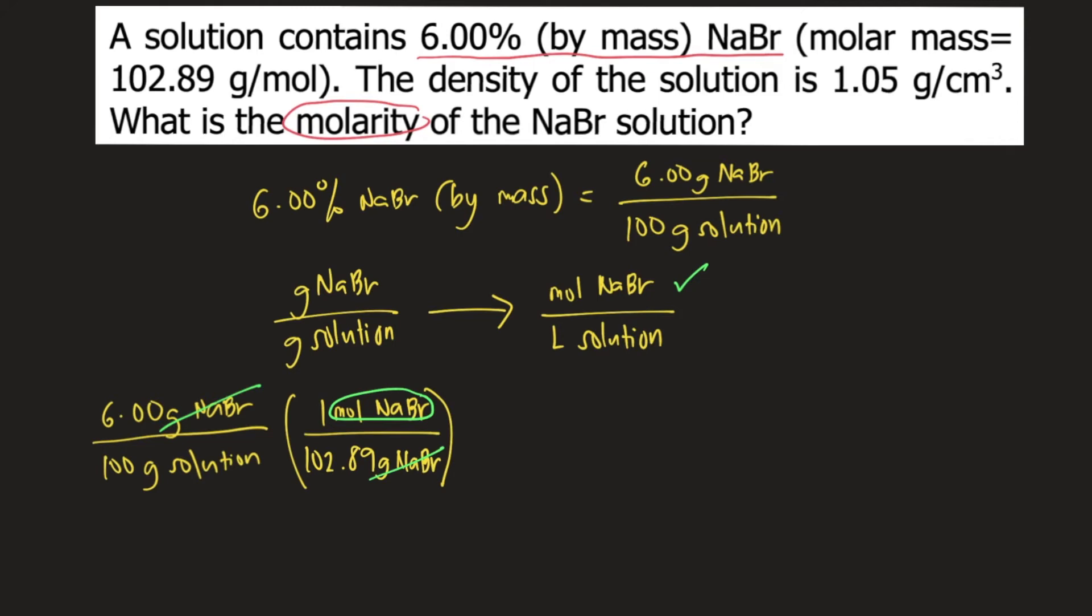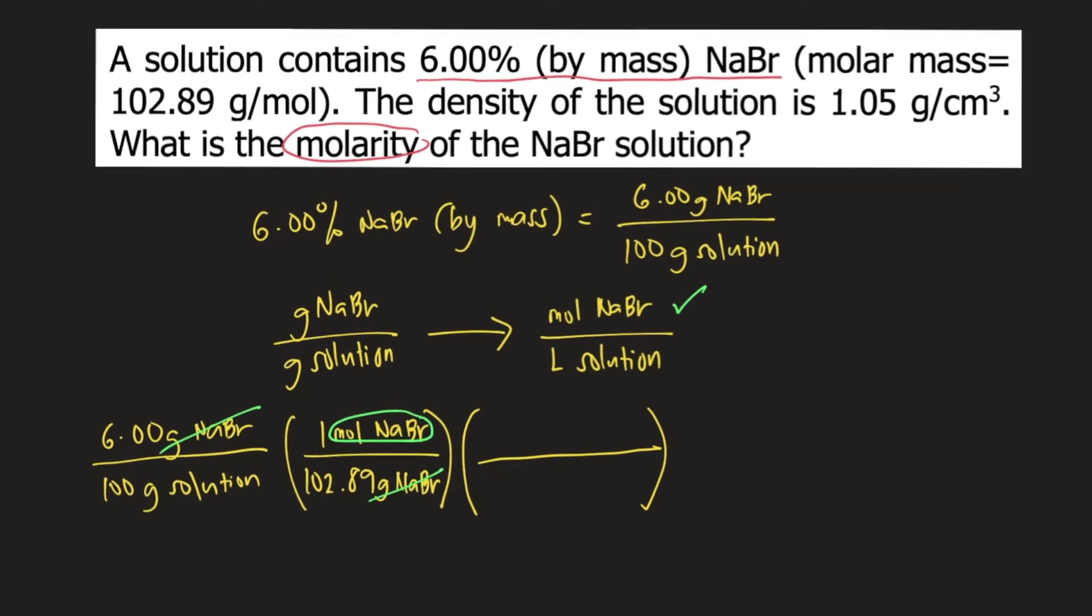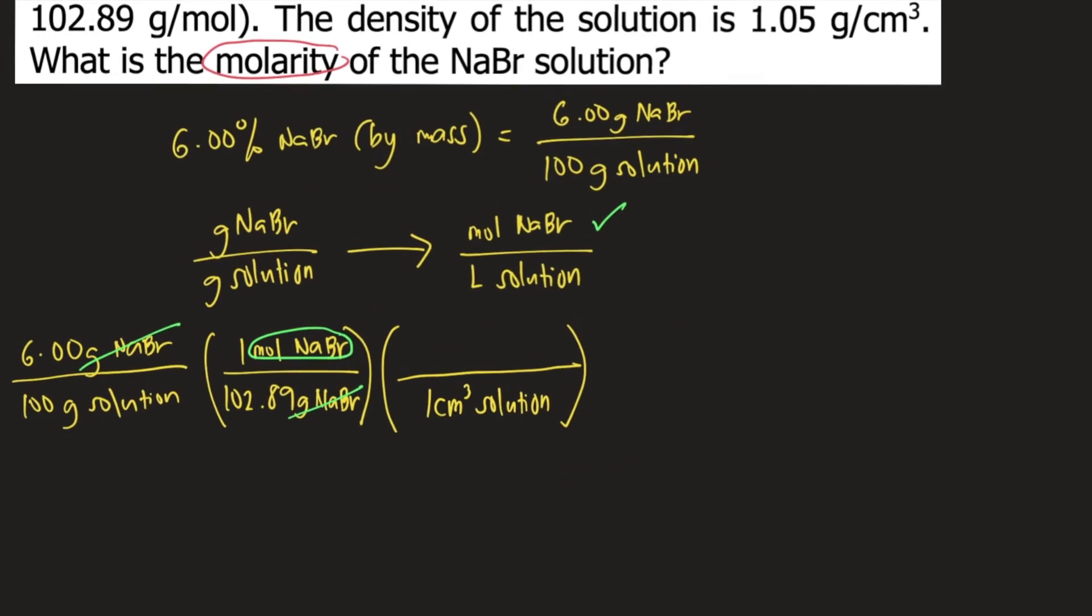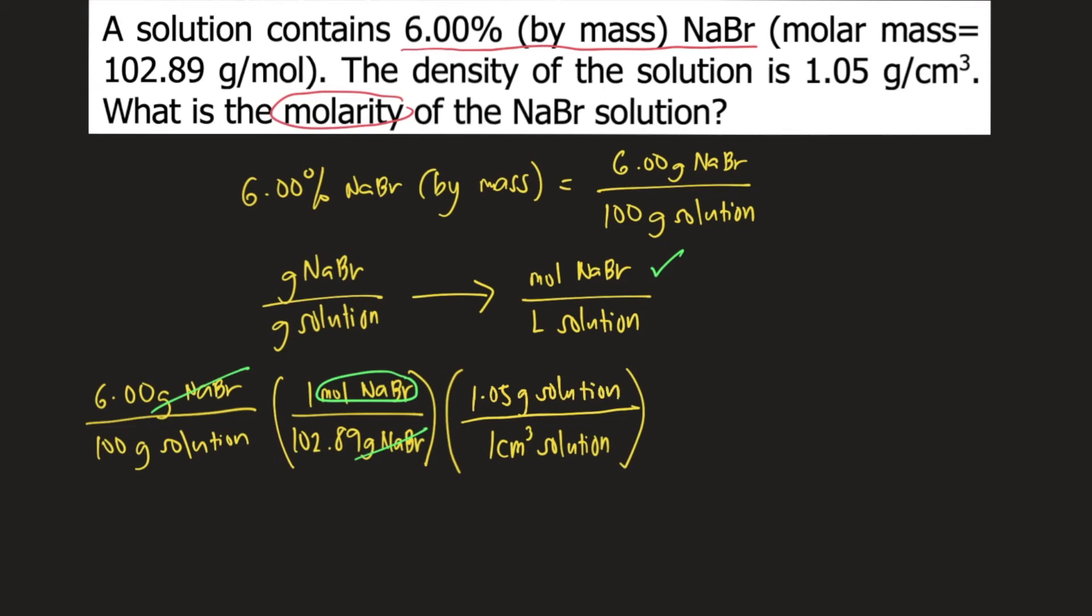Next, we convert the bottom unit from grams of solution to liters of solution. To do that, we need to use the density. According to the given in the problem, the density of the solution is 1.05 grams per cubic centimeter. That means that 1 cubic centimeter of solution weighs 1.05 grams of solution. So grams of solution would cancel. We have cubic centimeter of solution at the bottom.